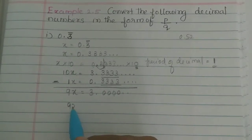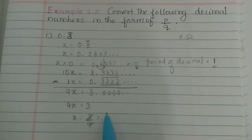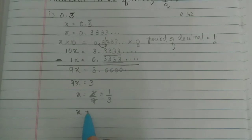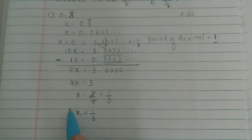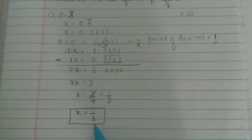9x is equal to 3. So x is equal to 3 by 9. We will cancel to get 1 by 3. So x value is equal to 1 by 3. So 0.3 bar is equal to the recurring decimal — recurring rational number. That means 1 by 3 is equal to the rational number.